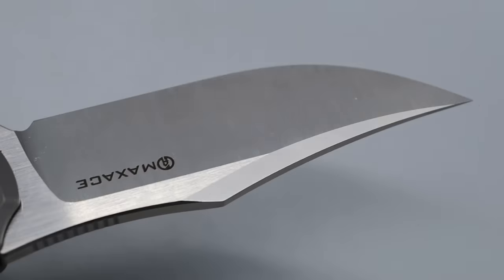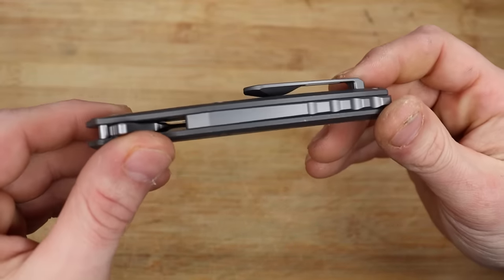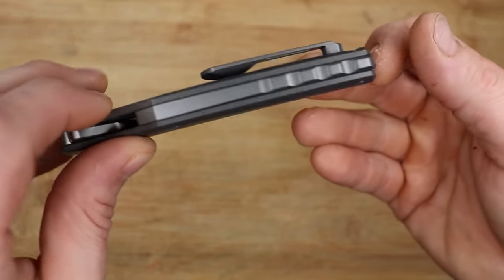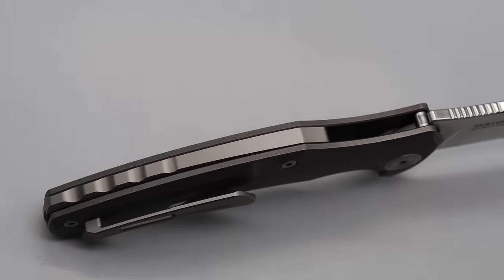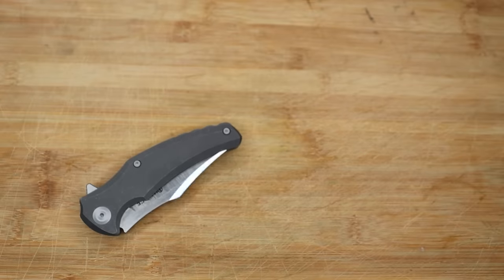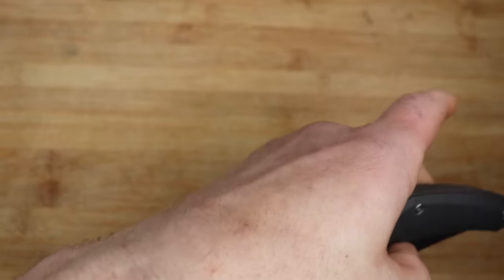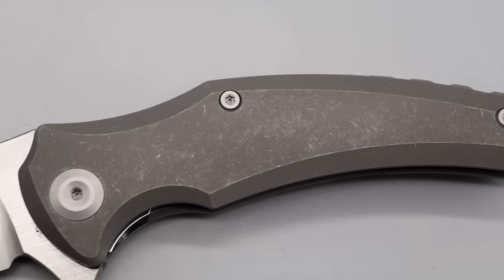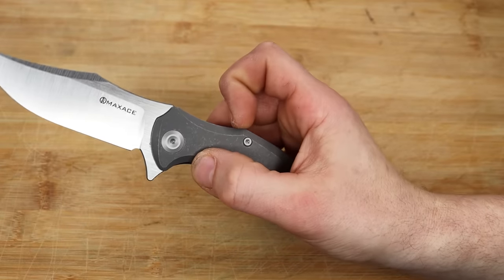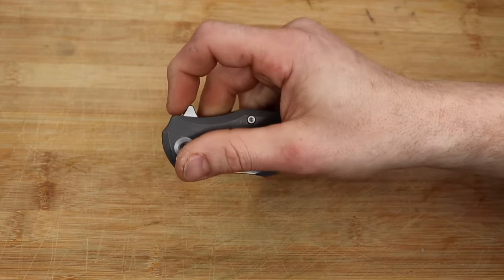It features a clip point blade shape and a titanium frame lock with full titanium backspacer. I like the way they did the lanyard hole and the titanium milled pocket clip. It's a large flipper tab but works great, and it's not a super strong detent but also not light. A lot of people would probably consider this really close to perfect.